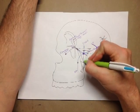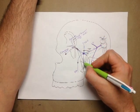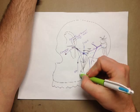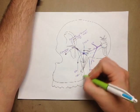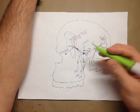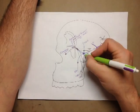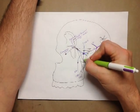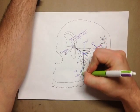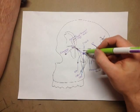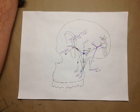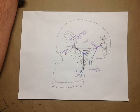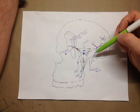You've got the descending or greater palatine nerves, and these branch into the greater palatine nerve and the lesser palatine nerves. Autonomic fibers come down these as well. You're also going to have the descending or greater palatine artery coming down there.